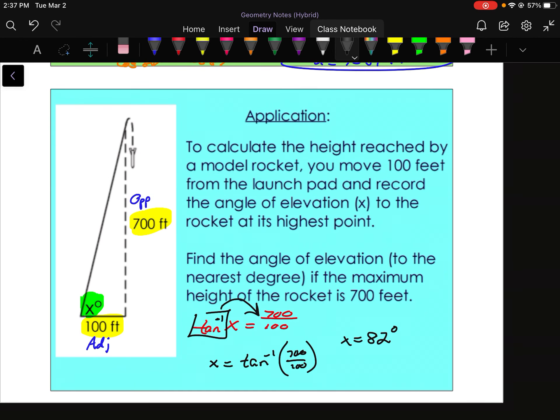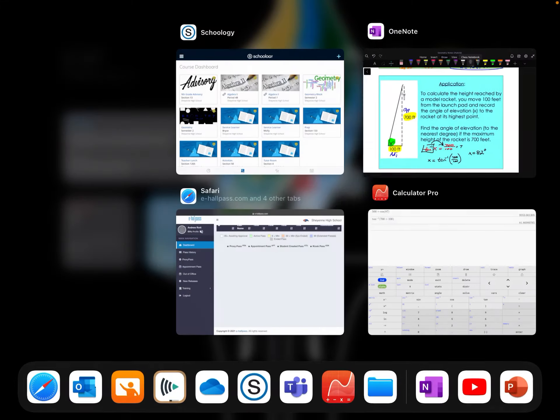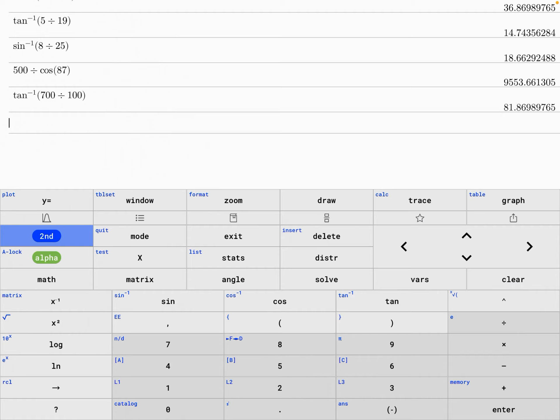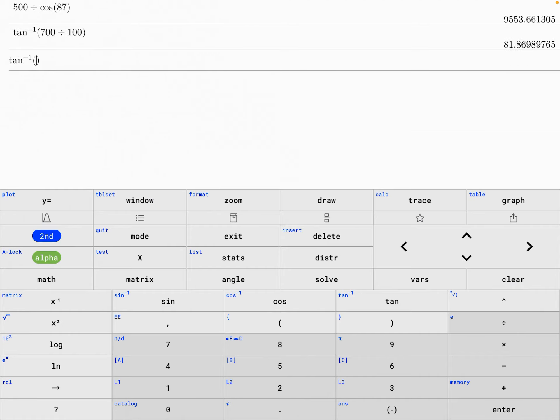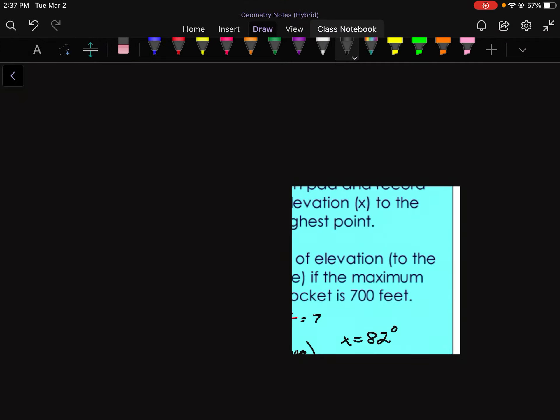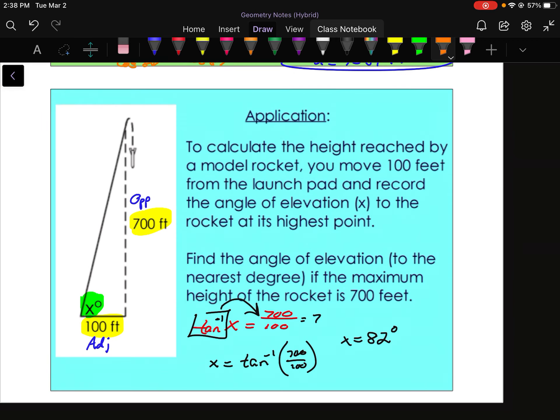Or, like I said, you could divide 700 by 100 and just say that that is 7. Let's see if that just works out the same. So tan inverse of 7. And sure enough, it's the same thing. So you can simplify the fraction or you can just type it in how you see it. And there we go. So the angle of elevation was 82 degrees.